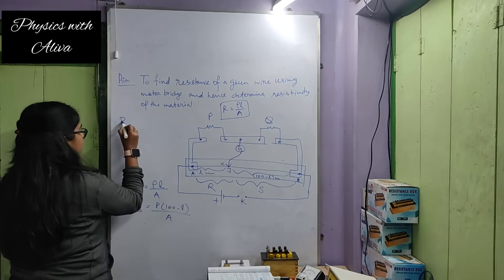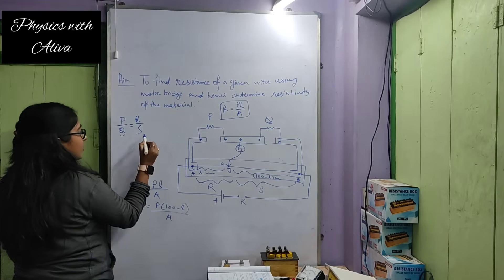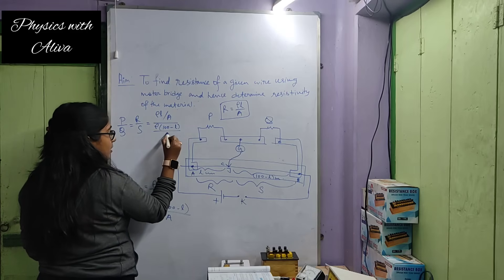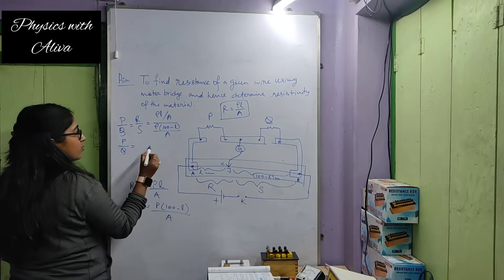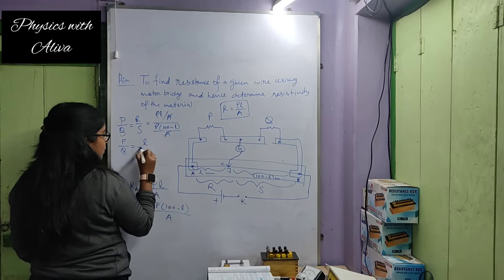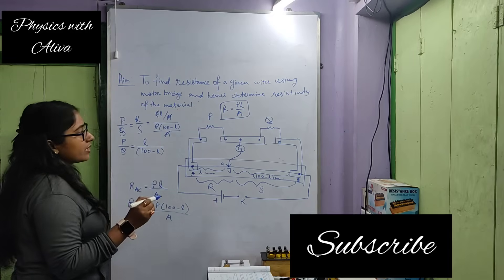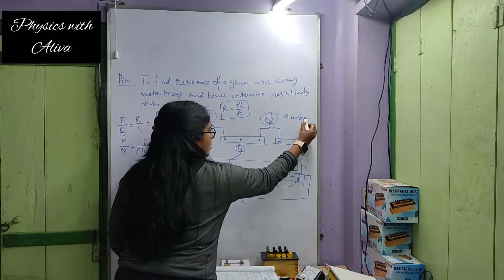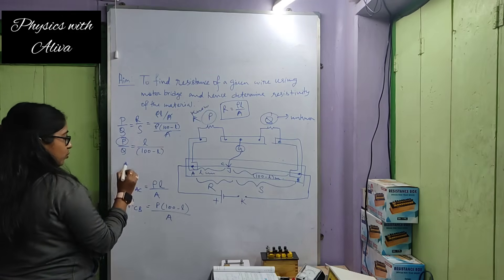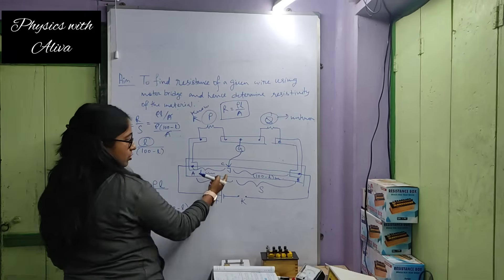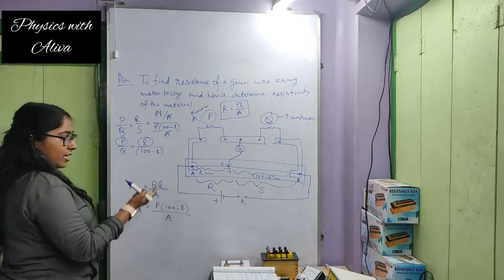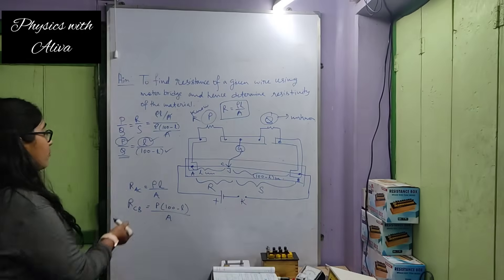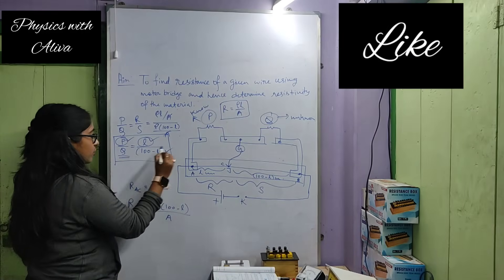In the balanced Wheatstone bridge condition, we write P/Q = R/S. Here R equals ρL/A and S equals ρ(100−L)/A. So P/Q = L/(100−L), since ρ and A cancel out. If the value of P is known and we know the position of the null point, we know L and (100−L). From this, we can calculate Q, the value of the unknown resistance. This is the main working formula of our practical.